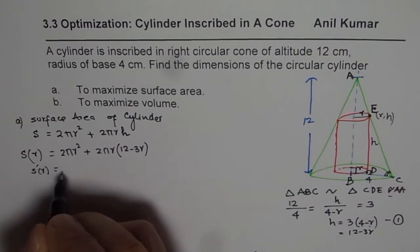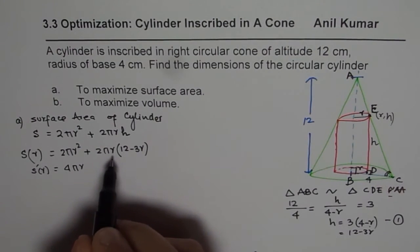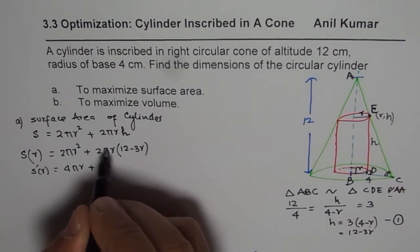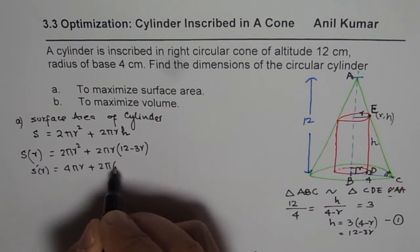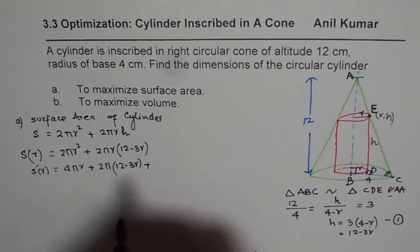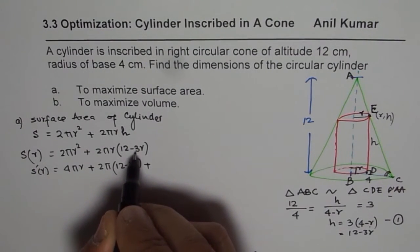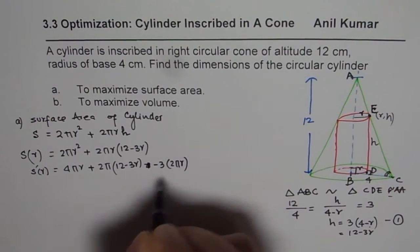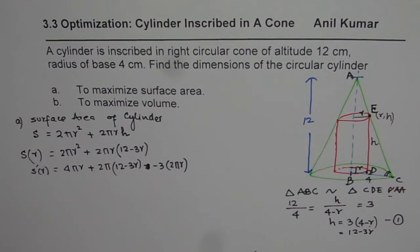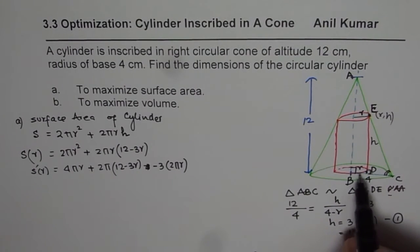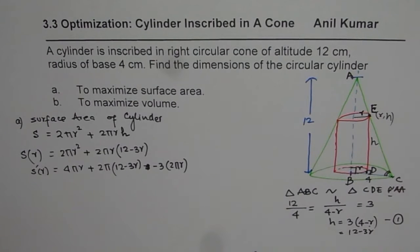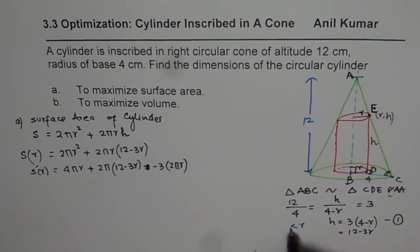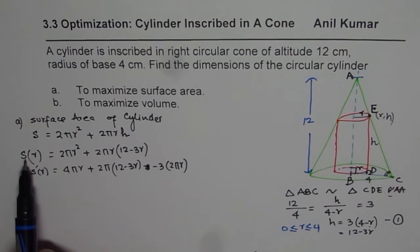Now since we already have a relation for H, which is 3 times 4 minus R, we can substitute H with this value. So we get 2 pi R square plus 2 pi R times 12 minus 3 R. So we got surface area in terms of R, so single variable. Now we can find the derivative. So that will give us the critical point, so which will be 4 pi R. And when you multiply this, we could say 2 pi R, 2 pi times, let me do product now. Now, what is the limit for R in this particular case? As you can see, R could be from 0 to 4. So R is either greater than or equal to 0 or is less than or equal to 4.